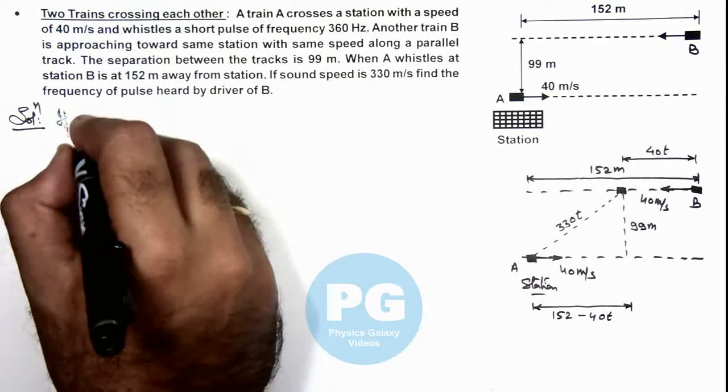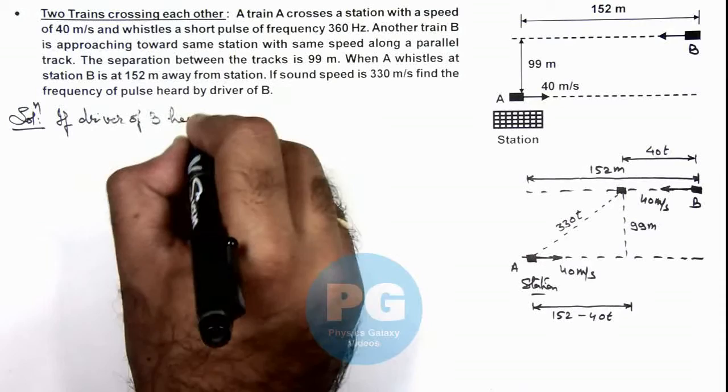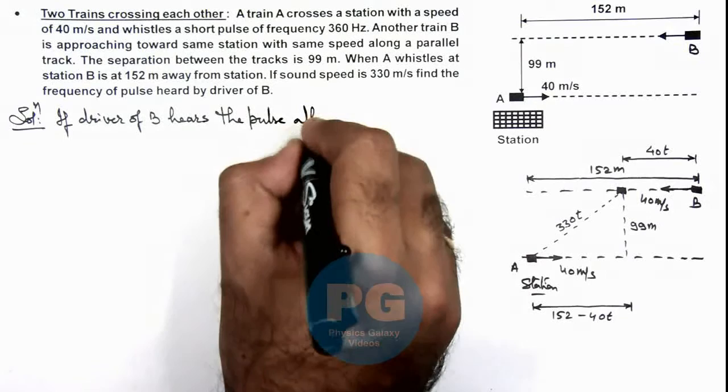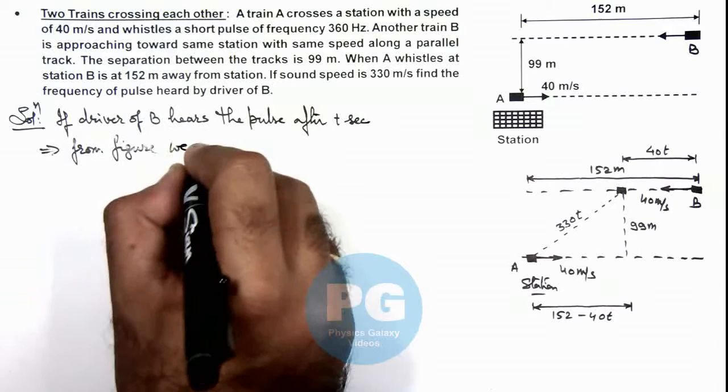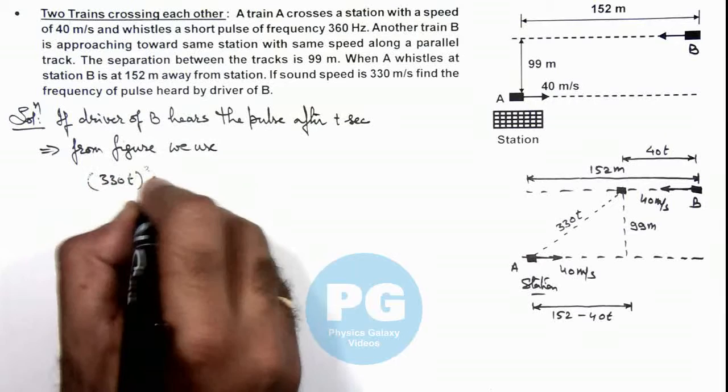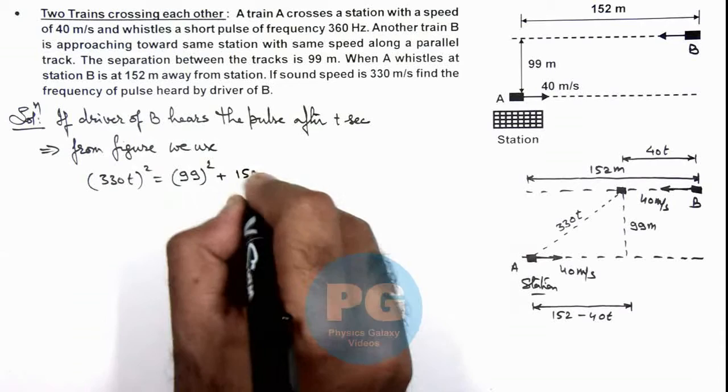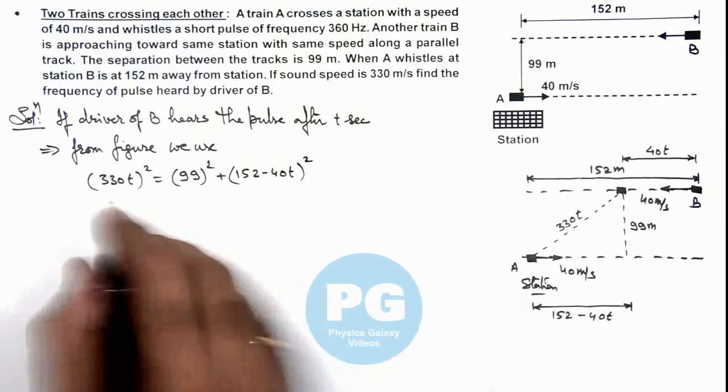If the driver of B hears the pulse after t seconds, this implies from the figure we use (330t)² equals 99² plus (152 - 40t)².